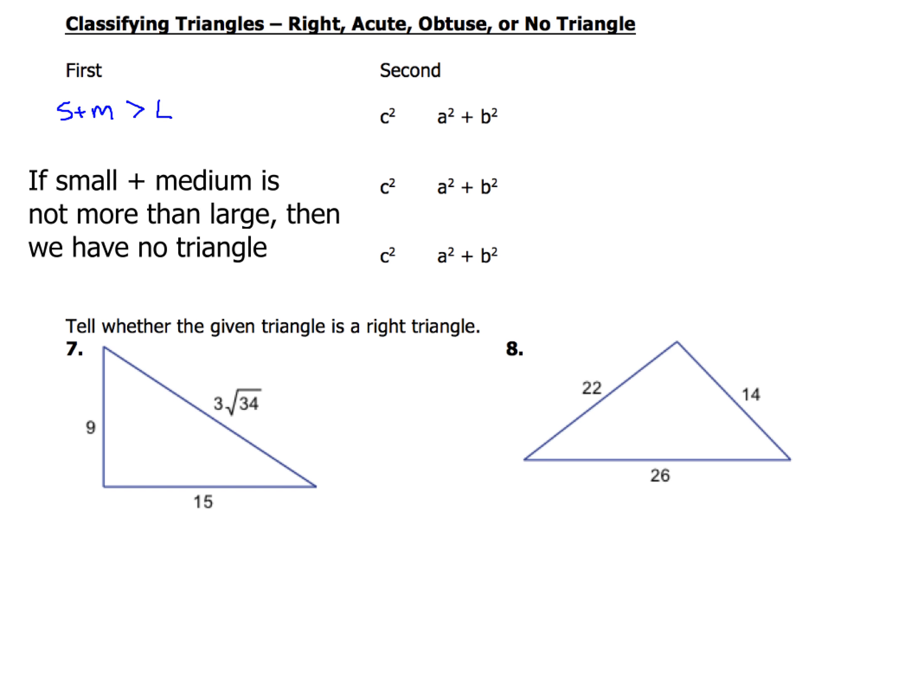But in the event that we do, let's check it out. If c squared equals a squared plus b squared, then we know that we have a right triangle. All right, pretty straightforward.